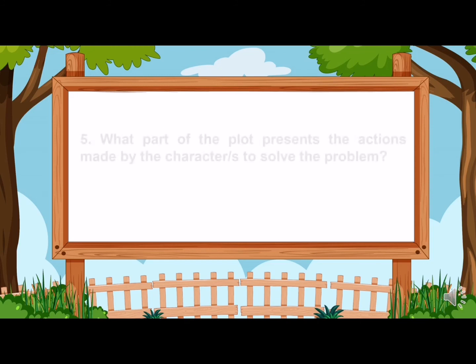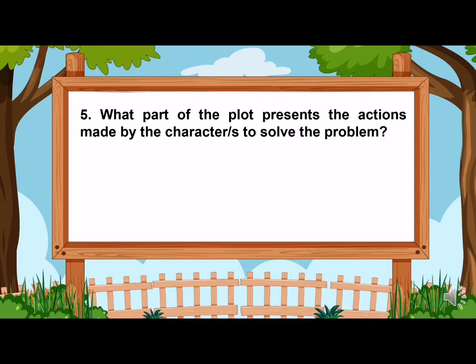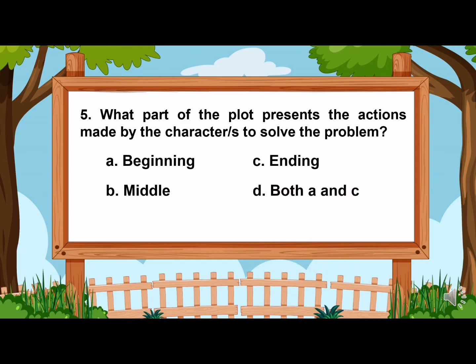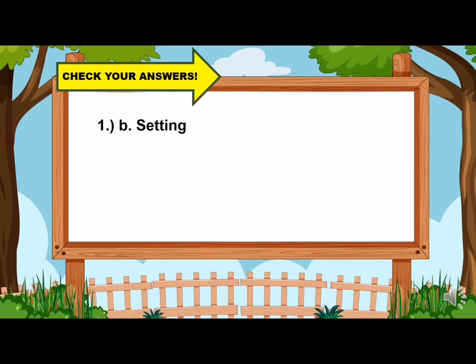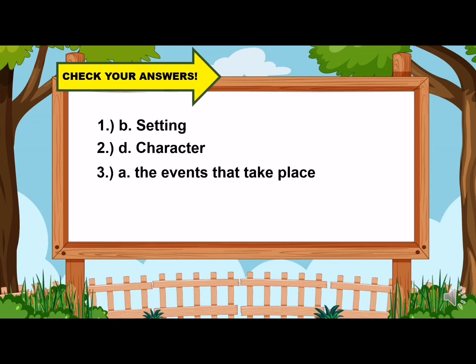And the last item: What part of the plot presents the actions made by the characters to solve the problem? Letter A, beginning; B, middle; C, ending; or D, both A and C. Now let us check your answers. For item number one, the correct answer is letter B, setting. Number two, we have letter D, character. Number three, we have letter A, the events that take place. And number four, we have letter C, when. And number five, we have letter B, middle.